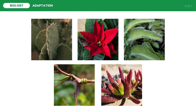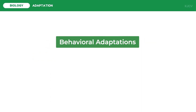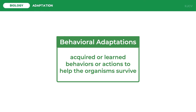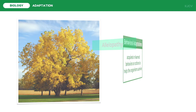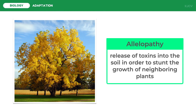Aside from adapting using structures, organisms can also adapt in their behaviors. Behavioral adaptations are acquired or learned behaviors or actions to help the organism survive. One example is allelopathy — the release of toxins into the soil in order to stunt the growth of neighboring plants. The black walnut tree has this adaptive mechanism, secreting a chemical from its roots to delay the growth of neighboring plants.